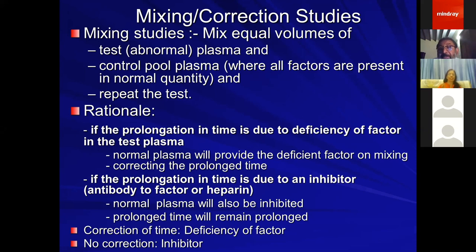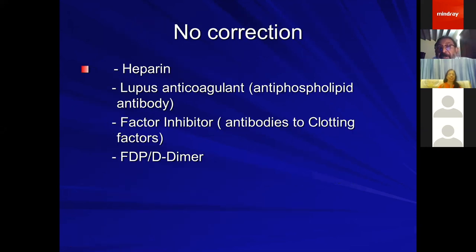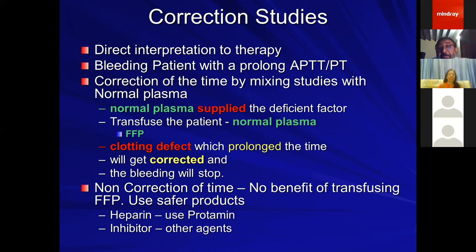Correction of the abnormal time after mixing indicates factor deficiency, while non-correction indicates an antibody to a factor or heparin. The most common causes of non-correction are heparin, lupus anticoagulant, factor inhibitors, and large amounts of FDPs and D-dimer. This correction study has direct implications for therapy: if mixing studies show correction, transfusing FFP containing the deficient factor will correct the clotting and stop bleeding.